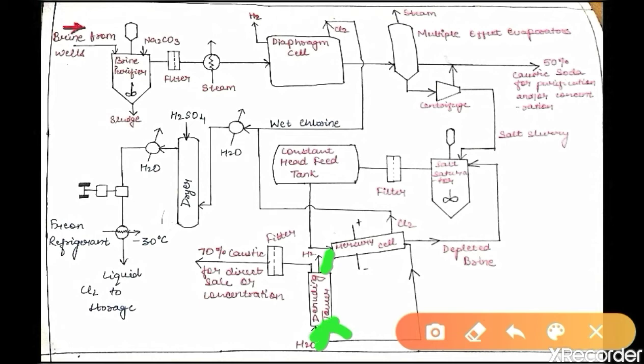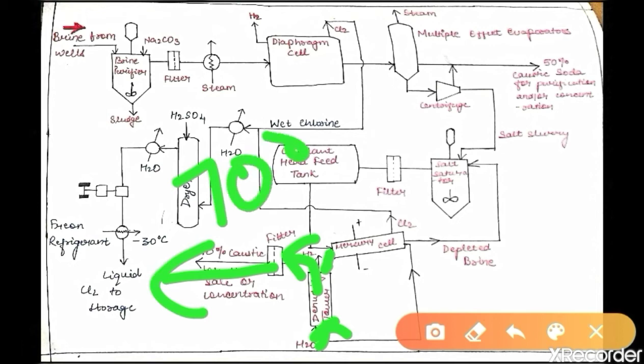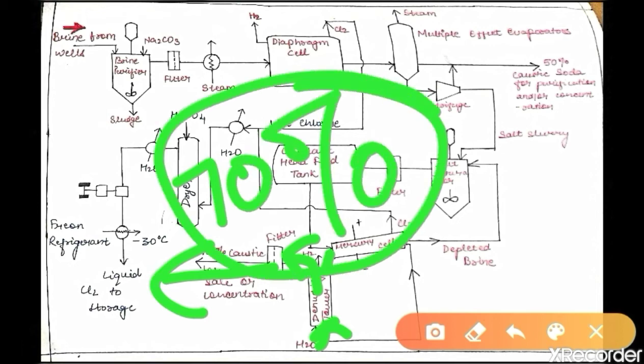The NaOH formed in the mercury cell may contain some impurities and is sent through a filter. The resulting caustic soda at 70% concentration is then ready for sale, or it can be sent for further concentration if a higher-concentration NaOH product is required.